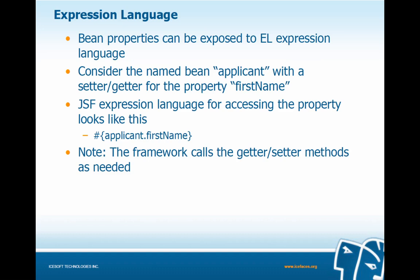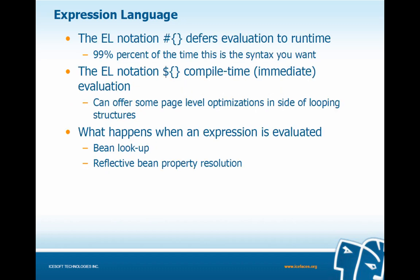Bean properties can be exposed to expression language. Consider the named bean 'applicant' with a getter/setter for the property 'firstName'. The JSF expression language for accessing this property looks like: pound symbol, opening bracket, the bean instance name 'applicant', followed by the property 'firstName', and a closing bracket. The framework will call the getter and setter methods as needed. The EL notation with pound sign and brackets defers evaluation to runtime — this is the syntax we'll use 99% of the time. The dollar sign notation is a compile-time or immediate evaluation, which can offer page-level optimizations inside looping structures, but is rarely used.